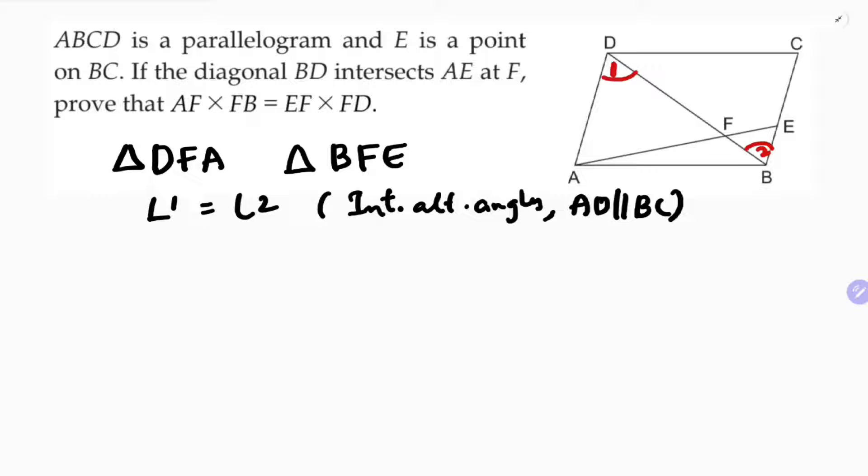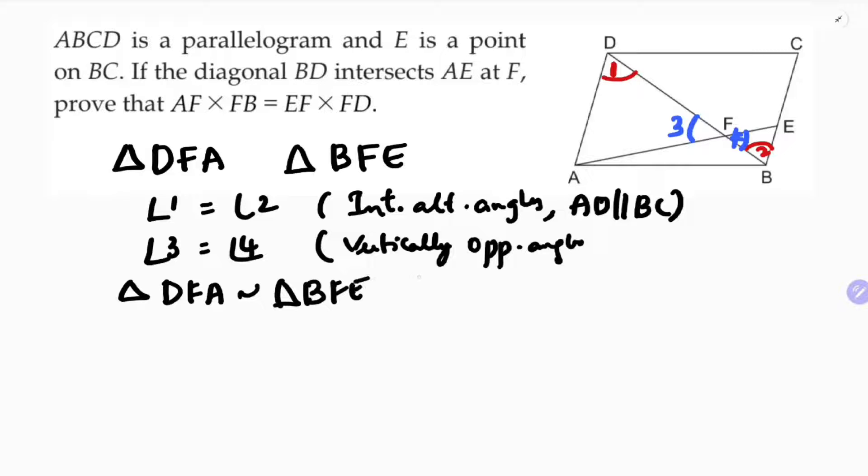Next one, angle 3 equals angle 4. Here for this angle which is 4, the reason is vertically opposite angles. So two triangles are similar, triangle DFA is similar to triangle BFE because angle angle similarity. Two angles you got equal, so with the help of angle angle similarity, two triangles are similar.